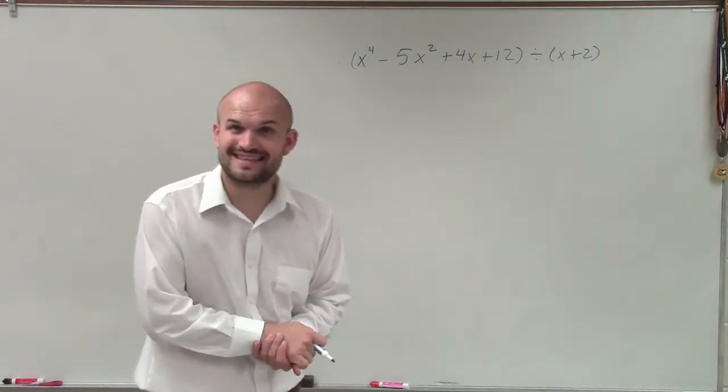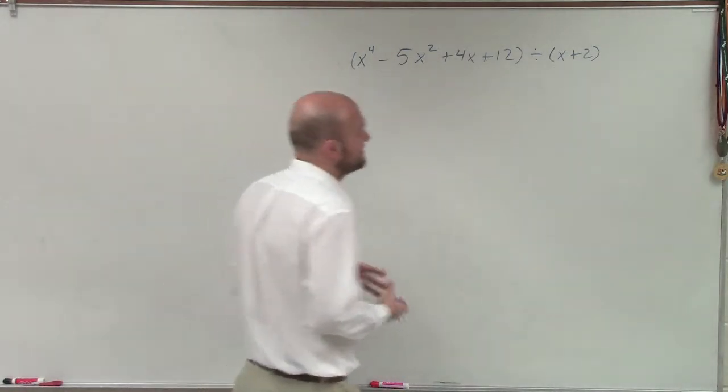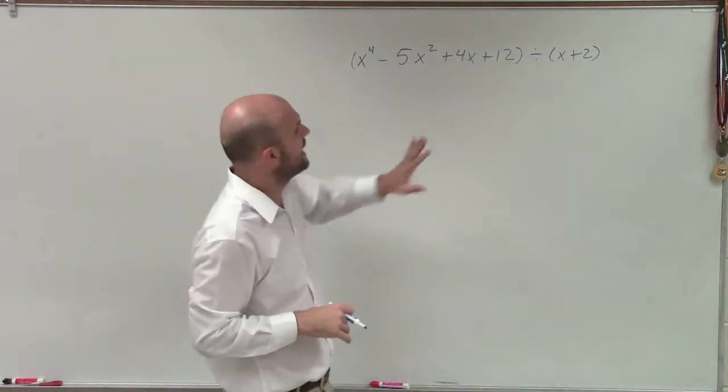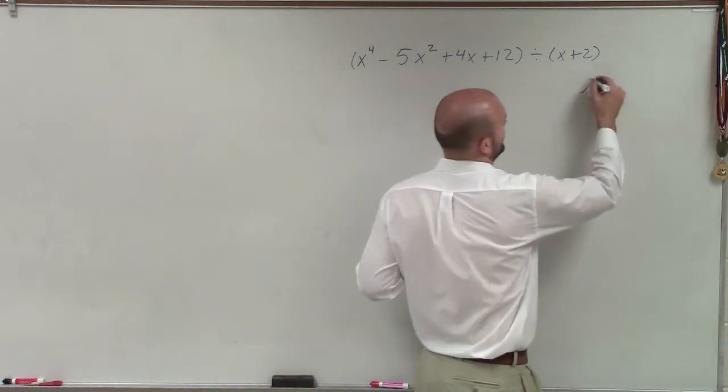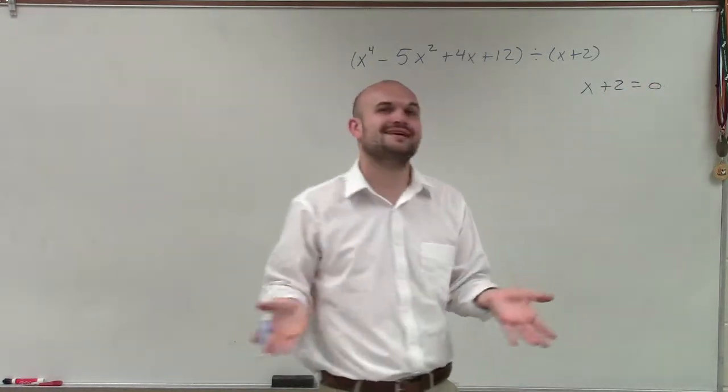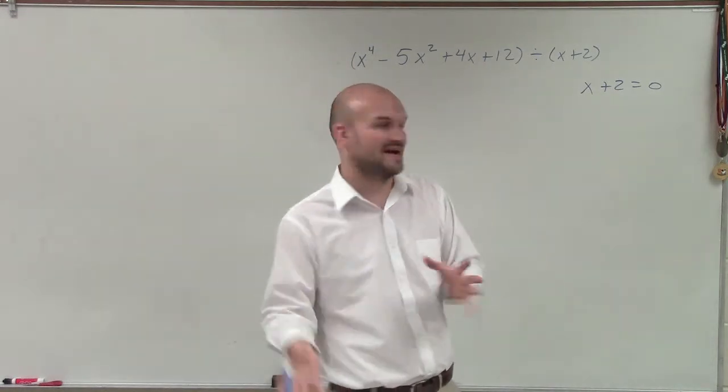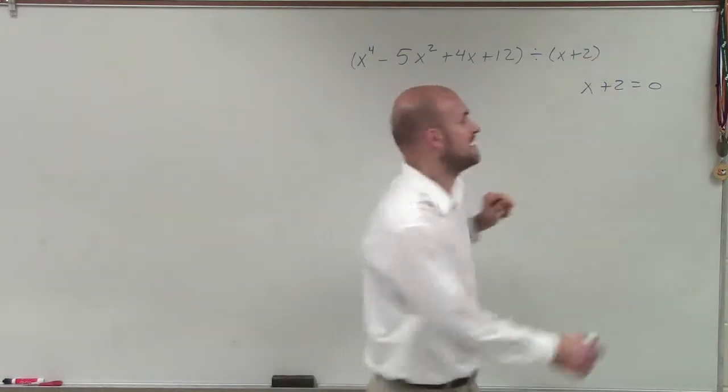And what we're going to do is we're going to do a little synthetic division. So when using synthetic division, we need to make sure that first we have a binomial raised to the first power. And then what we're going to do is we're going to take that binomial and we're going to set it equal to 0. We'll get to more of why we're setting it equal to 0 later on, but it is related to our factors and zeros. Here is a factor, so we're going to find the zero.